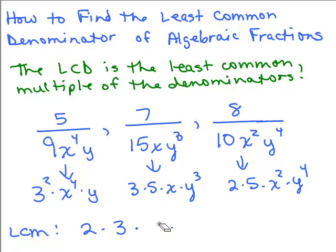I also forgot a 5, so we've got a 2, a 3, a 5, an x, and a y. Then you see if any of these have exponents and choose the highest exponent. There's only one 2 with no exponent. For 3, there's a 3 squared, so you choose that. For 5, there are no exponents. For x, the highest exponent is x to the 4th. And for y, the highest exponent is the 4th. So that is the least common denominator of these three fractions.